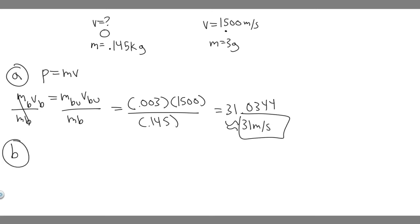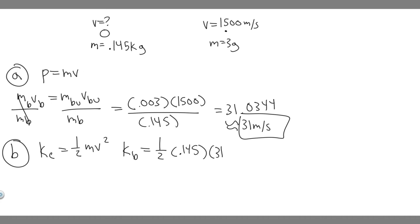Now let's move on to Part B, which is trying to find which has greater kinetic energy. Kinetic energy is ½mv². Since we know the mass and velocity of each, we can solve for their kinetic energy and find which number is greater. Starting with the ball: KE = ½ × 0.145 × 31².